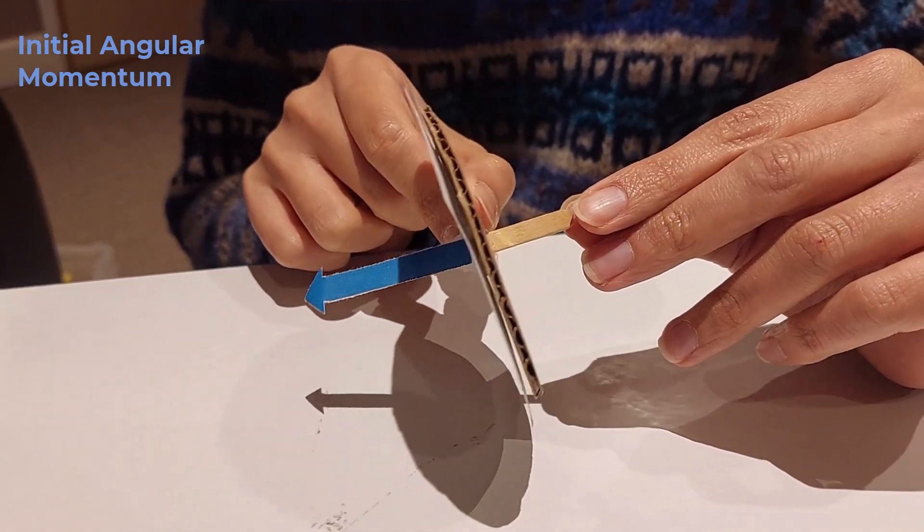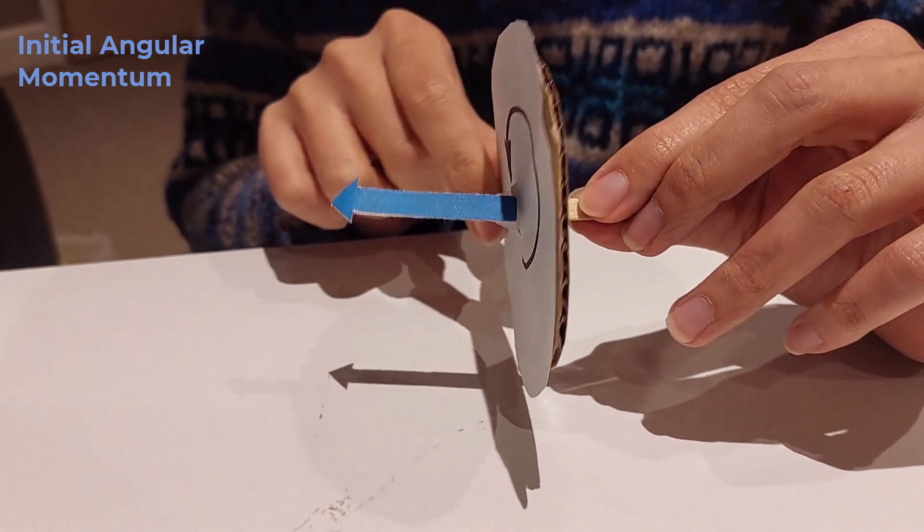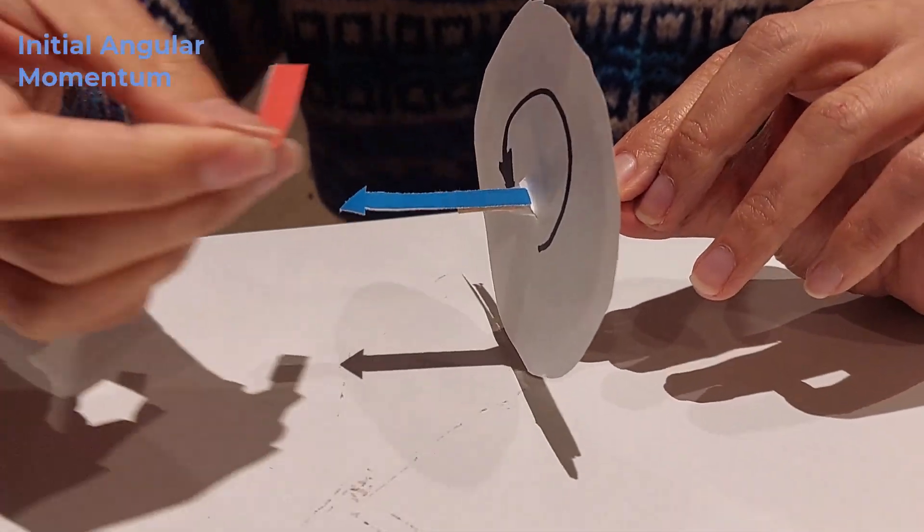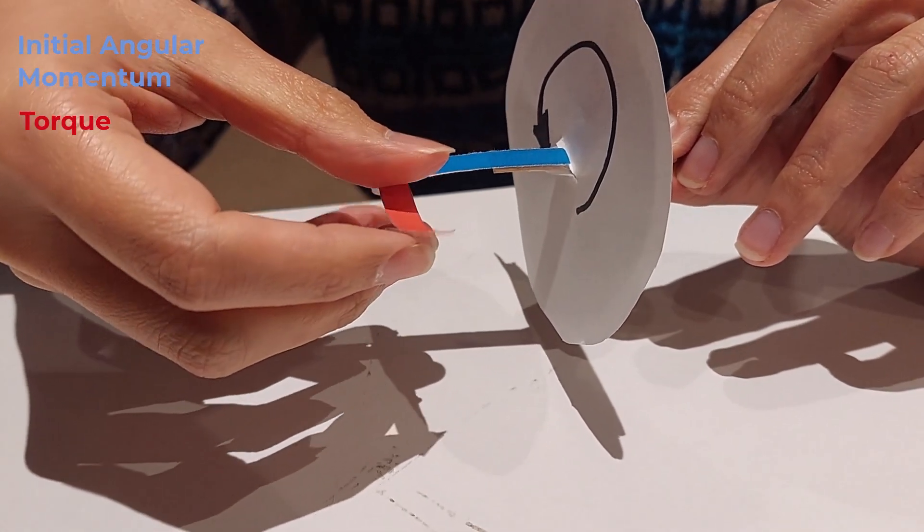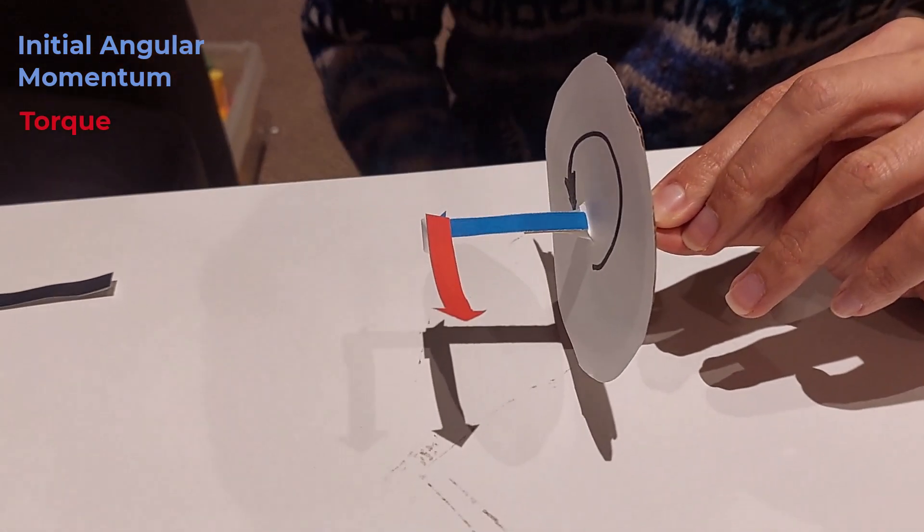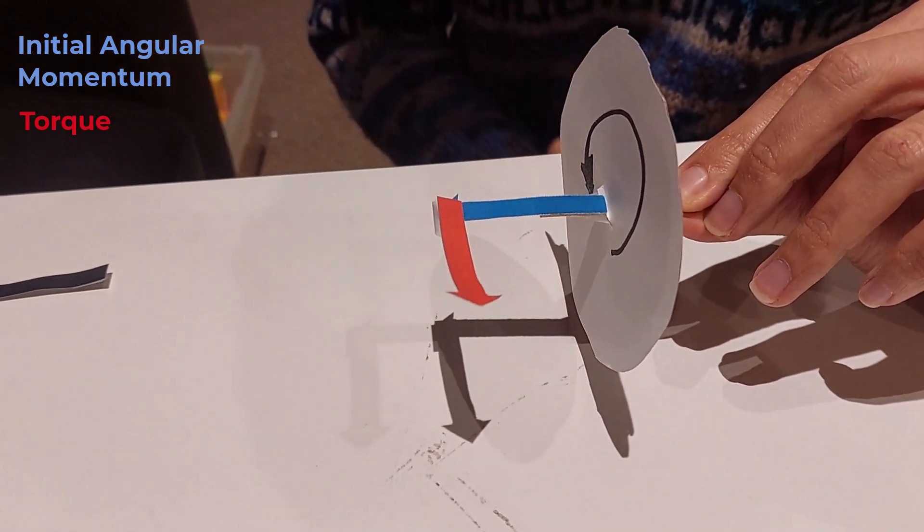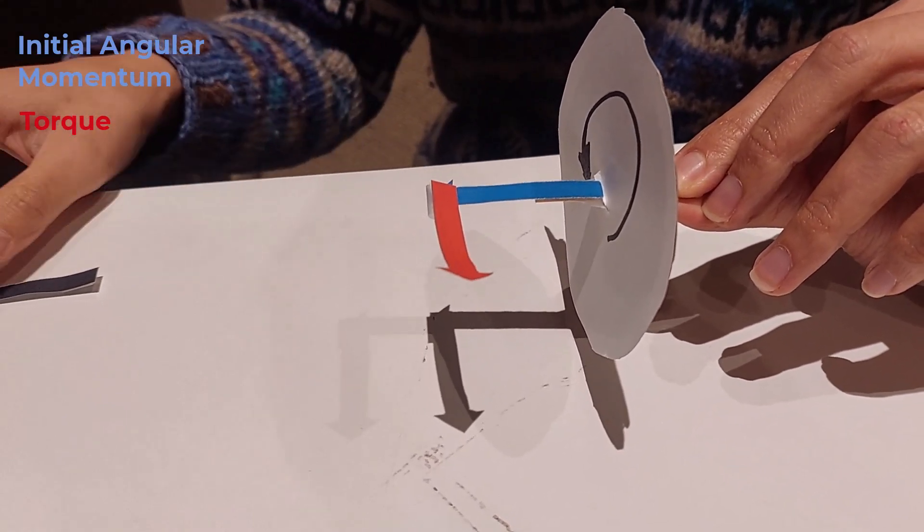the wheel is tipping under the influence of gravity, gravity exerts a forward torque onto the system. The vector nature of the angular momentum tells us that we need to add these two components together to obtain the final angular momentum,